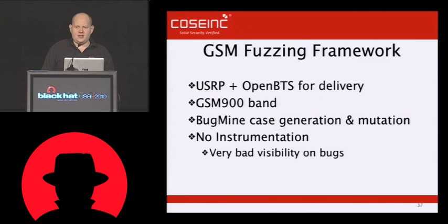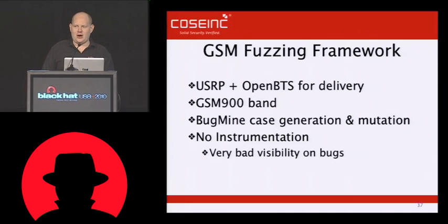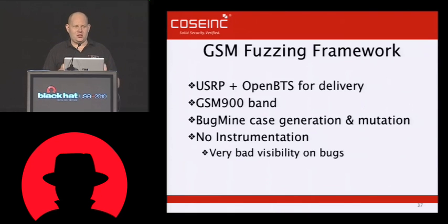Far more irritating is the fact that we have no visibility, no instrumentation. All that happens is we make a phone reboot and we detect this by using a ping — a very sophisticated tool that can monitor whether a phone is on a WiFi network or not. If it's not on the WiFi network, we detect that the phone has crashed, and if it's crashed, we assume it was some data we sent previously. So it's very hard to go from fuzzing attacks that make a phone reboot to usable exploits we can use to own people when they walk by.